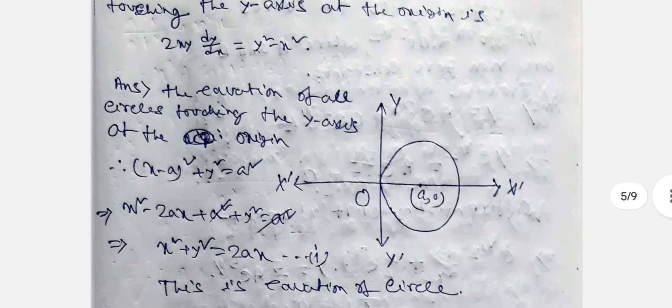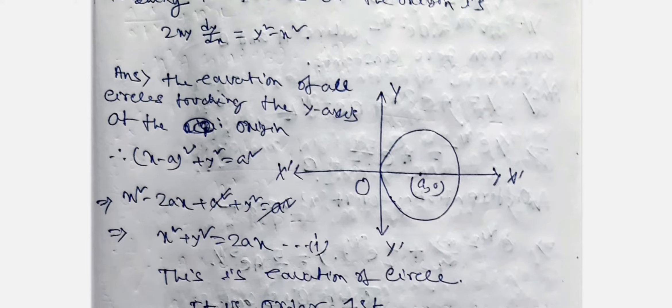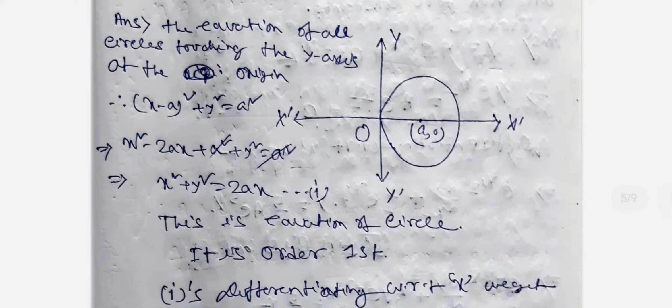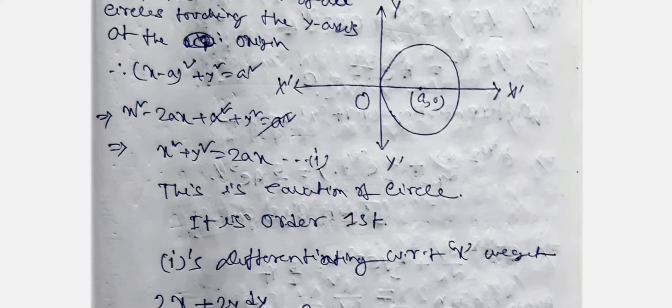Next question: Show that the equation of all circles touching the y-axis at the origin is 2xy·dy/dx = y² - x². Drawing the picture: the center of the circle is at (a, 0), touching the y-axis at the origin. The equation of all such circles is (x - a)² + y² = a². Expanding: x² - 2ax + a² + y² = a², so x² + y² = 2ax, which is equation 1.